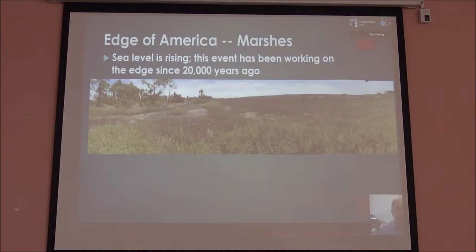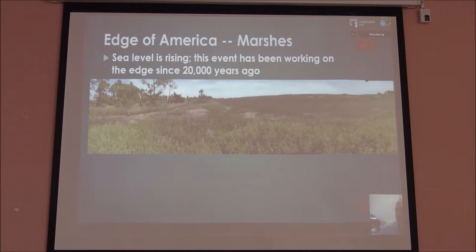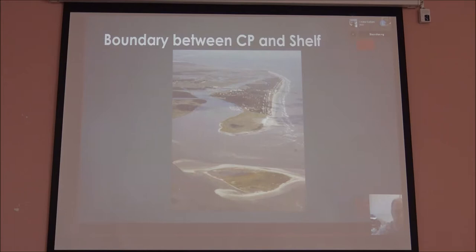Sea level is rising — this event has been going on for 20,000 years. It used to be out towards the shelf edge, and now it's rising up over these little marsh islands. This island right here is about 4,000 years old. Because of the temperature and humidity here, really the only things we find are pottery and points — different types of cherts made of stone. Those are really the only two things that survive out here. This is the modern marsh system, and then this is the modern shoreline.